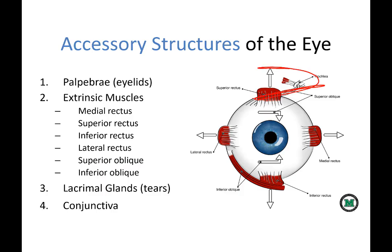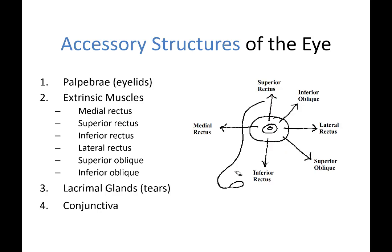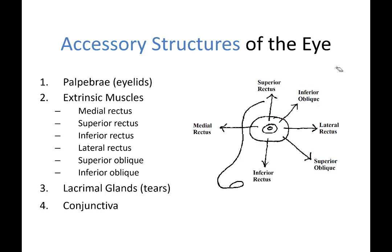The superior oblique and inferior oblique are called oblique muscles because they go side to side. The superior oblique goes through a little trochlea, which acts like a pulley. The inferior oblique wraps around the underneath side of the eye. When these muscles contract, they move the eye in the opposite direction to where they're located. The inferior oblique lifts the eye up and lateral, while the superior oblique moves the eye down and lateral.